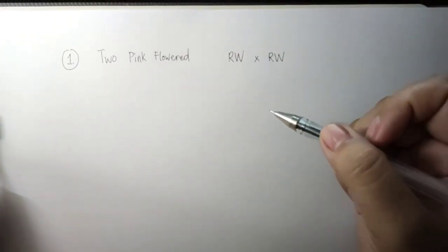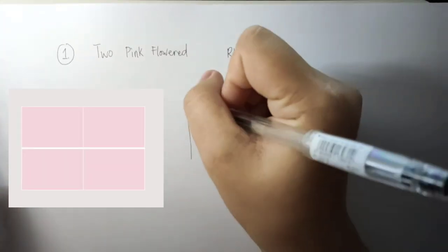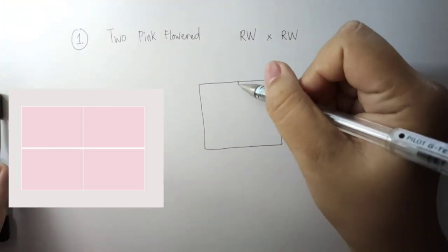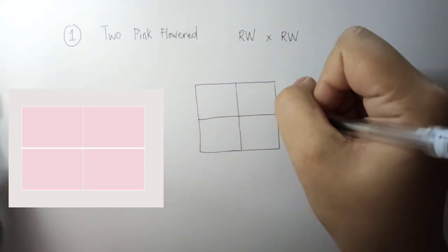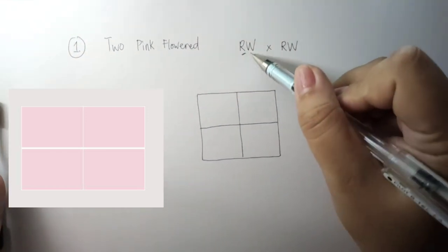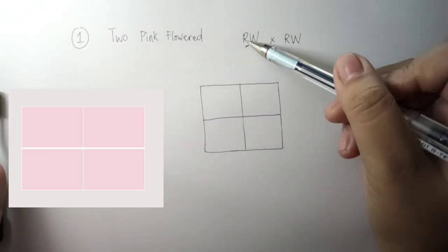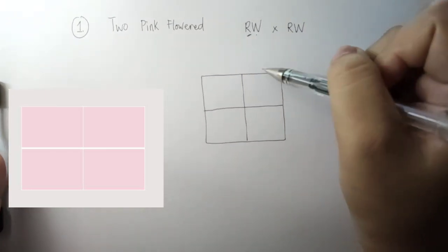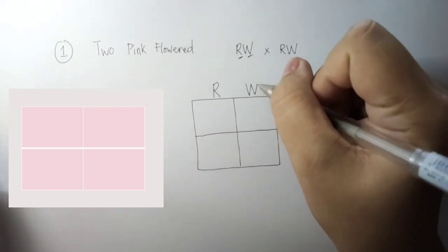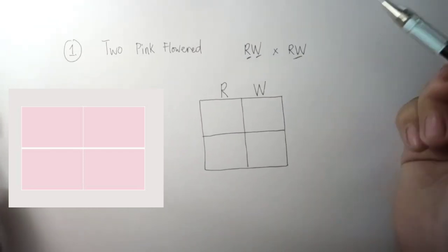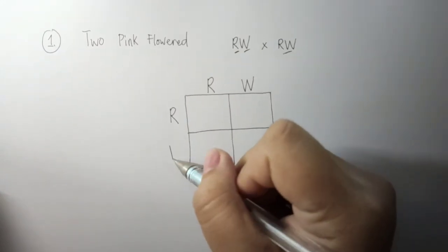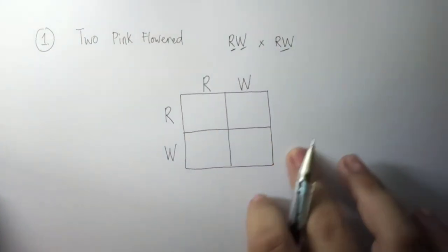We are going to draw a Punnett square. We'll start with the first combination of alleles, placing R and W at the top portion of the square — the first allele and the next one. Then the next parent allele goes on the left side: R and W. This is the picture of our Punnett square.